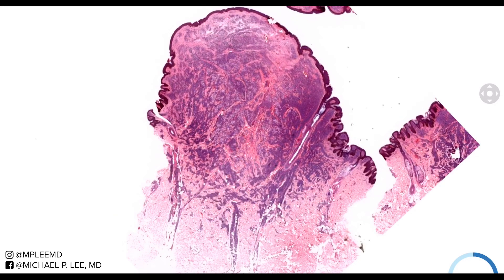Good morning, this is Dr. Lee with another episode of DermPath Made Easy. This is a solitary cutaneous mastocytoma — a benign proliferation of mast cells, forming a discrete, fleshy, red-to-yellow nodule, and it can be anywhere from 1 to 3 centimeters in size.